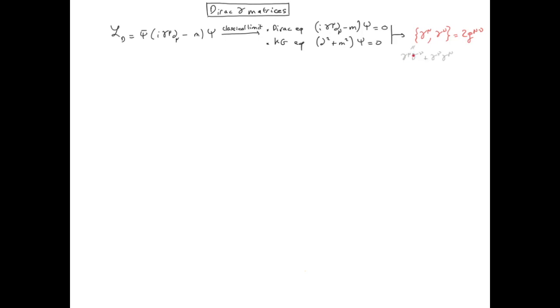So if we take mu and nu equal to zero, we see that we have gamma naught squared equals one. And if we take mu equal nu but not equal to zero, so equal to one, two or three, then we have gamma i squared equal to minus one.